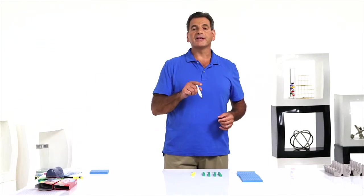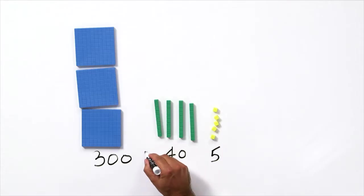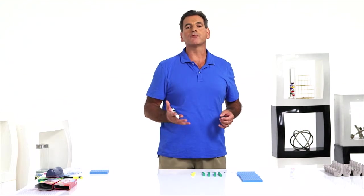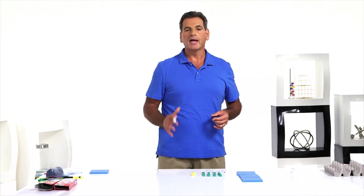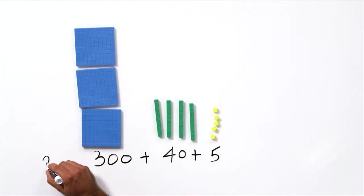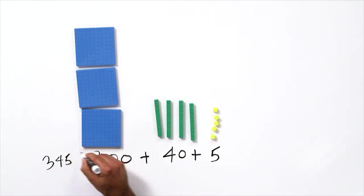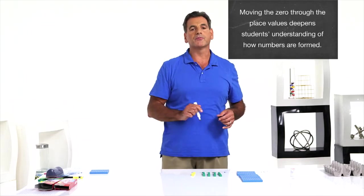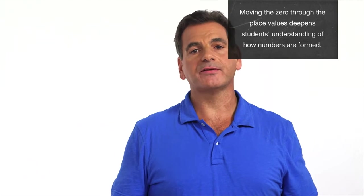Then say, please put an addition sign between those numbers. And then you can say, hey, guess what? You just learned a new way to represent a number, and it's called expanded form. And then have them finish by writing 345 equals 300 plus 40 plus 5. Repeat this activity with other numbers, including numbers that show the zero moving through the place values.